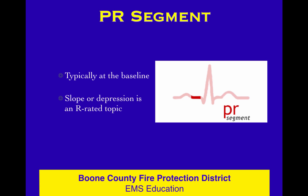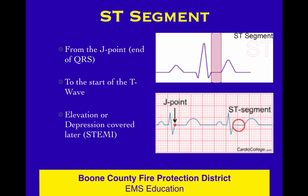Here's the PR shown a little differently. Sometimes it's the slope, or whether it is depressed off the baseline — below the baseline or not. Those things come in down the road when we're talking about pericarditis, atrial enlargement, and some other stuff. That's advanced material right now — I just want you to know where the PR is located. It's typically going to be at the baseline.